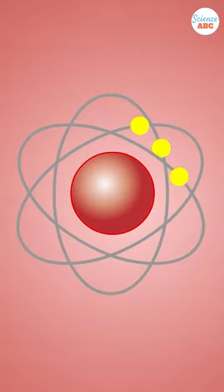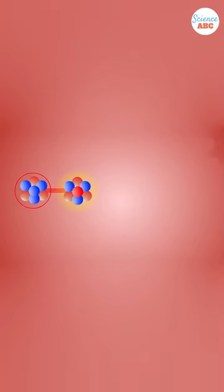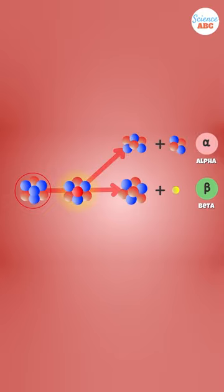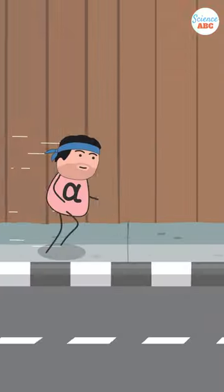A nucleus can undergo nuclear or radioactive decay through the emission of alpha, beta, or gamma radiation, and sometimes a combination of all three.